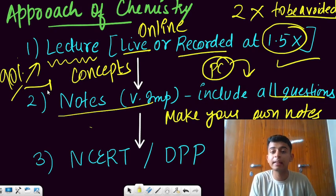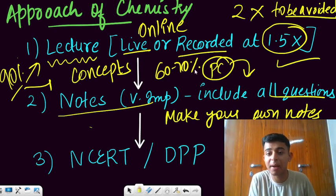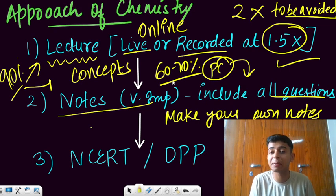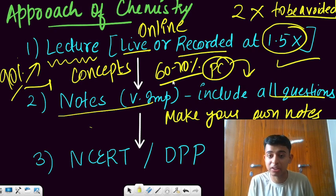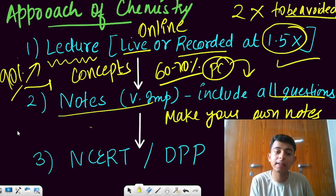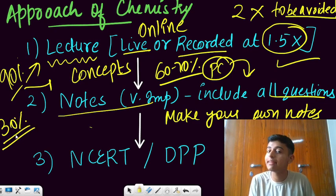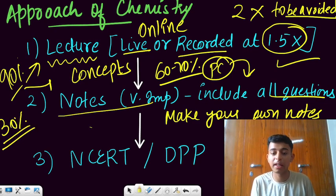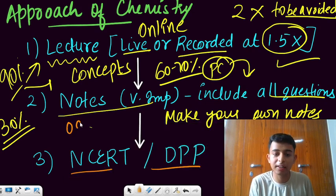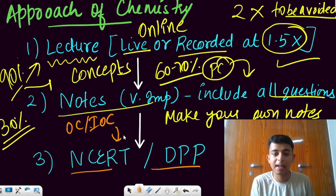After doing lecture and notes, 90% of students do this. If you are doing lecture and notes thoroughly, 60 to 70% of the battle is won. But after that, the remaining 30% which has to be your self-study part, that is not done by the students. What has to be done in the self-study part? Number one, NCERT and DPP for organic chemistry and inorganic chemistry. NCERT has to be read after the lecture.